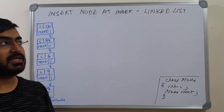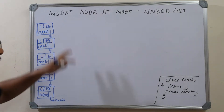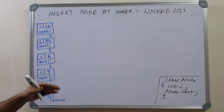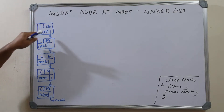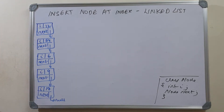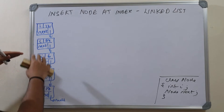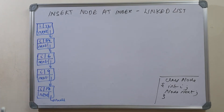In this video we will see how to insert a new node at a given index in the linked list. We have seen the cases where we have to insert the new node at the front, at the end, and now we look at the case where we have to insert the new node in between the two nodes.